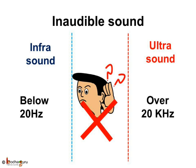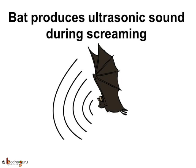And a sound with a frequency above the audible range of hearing, i.e., more than 20 kHz, is known as ultrasound. Human beings can neither produce ultrasonic sounds nor can they hear ultrasonic sound. But some animals like bats produce ultrasonic sound during screaming.